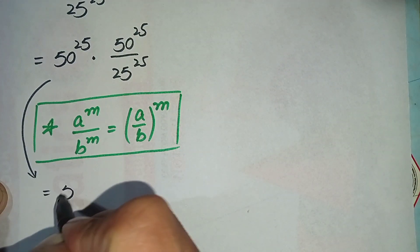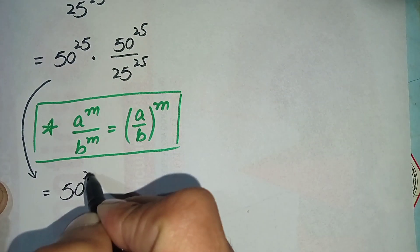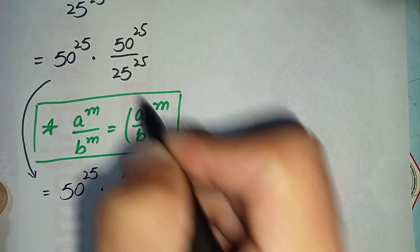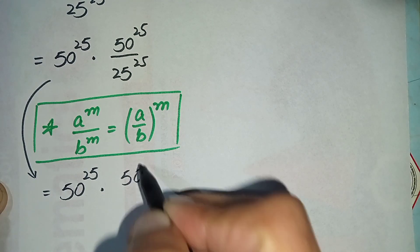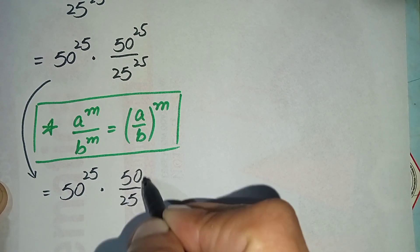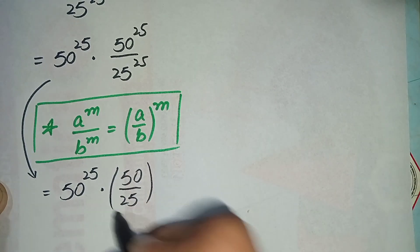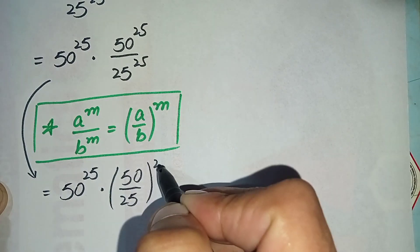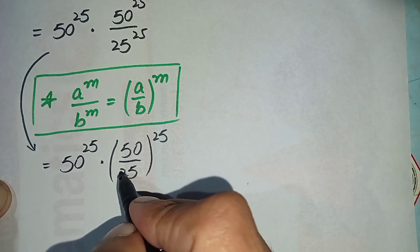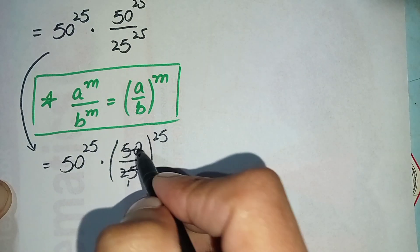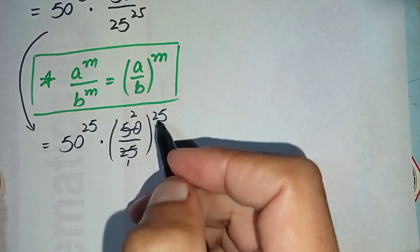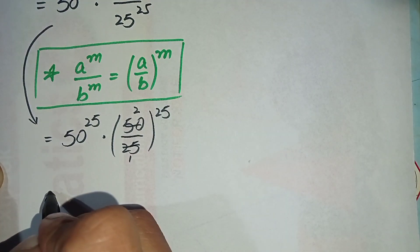Equal to 50 raised to power 25 times (50 divided by 25) raised to power 25. Now we simplify: 25 times 2 is 50, so 50 divided by 25 equals 2, giving us 2 raised to power 25.